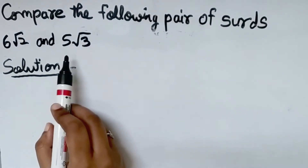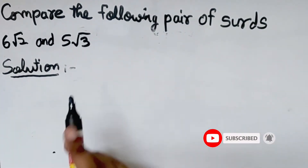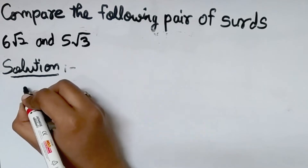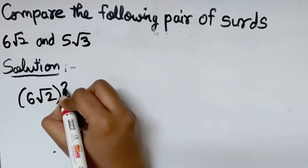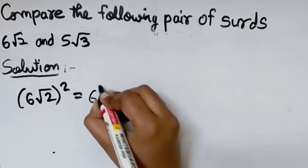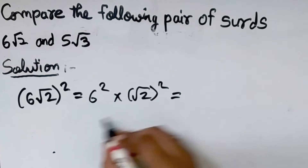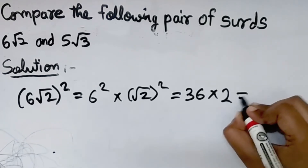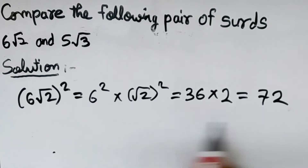Now compare 6 root 2 and 5 root 3. This uses another method — the second method. We take the square of 6 root 2: 6 squared into root 2 squared equals 36 into 2, which equals 72. Then we take the square of 5 root 3: 5 squared into root 3 squared equals 25 into 3, which equals 75.